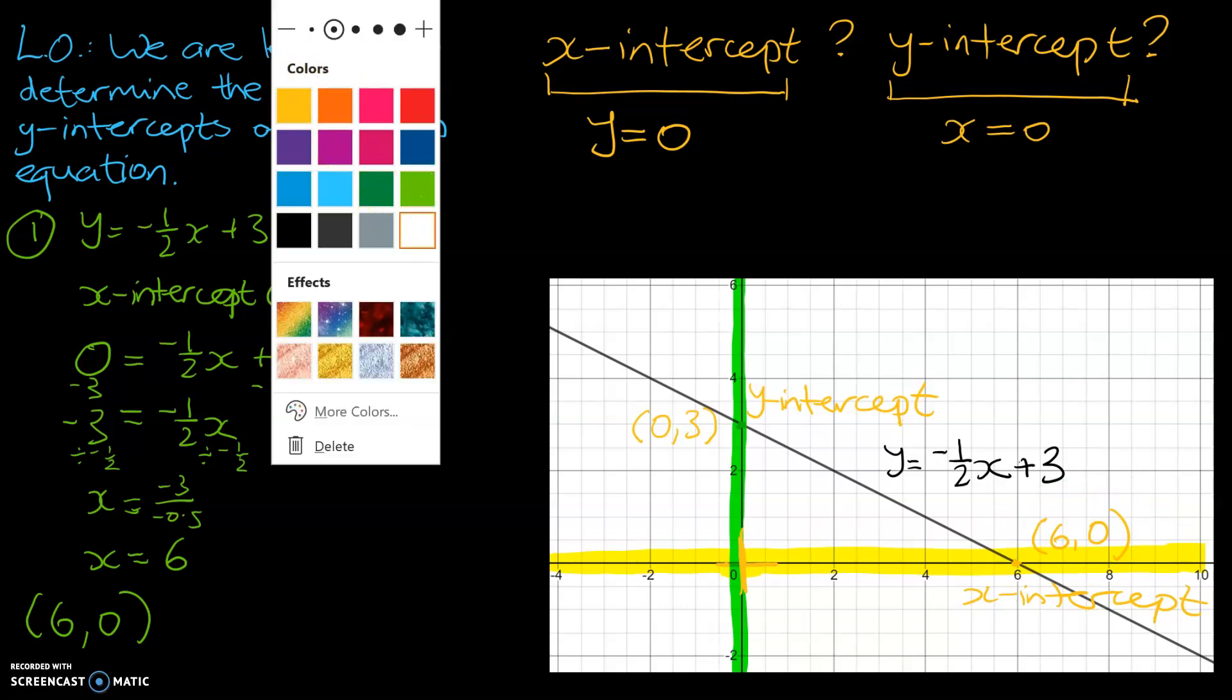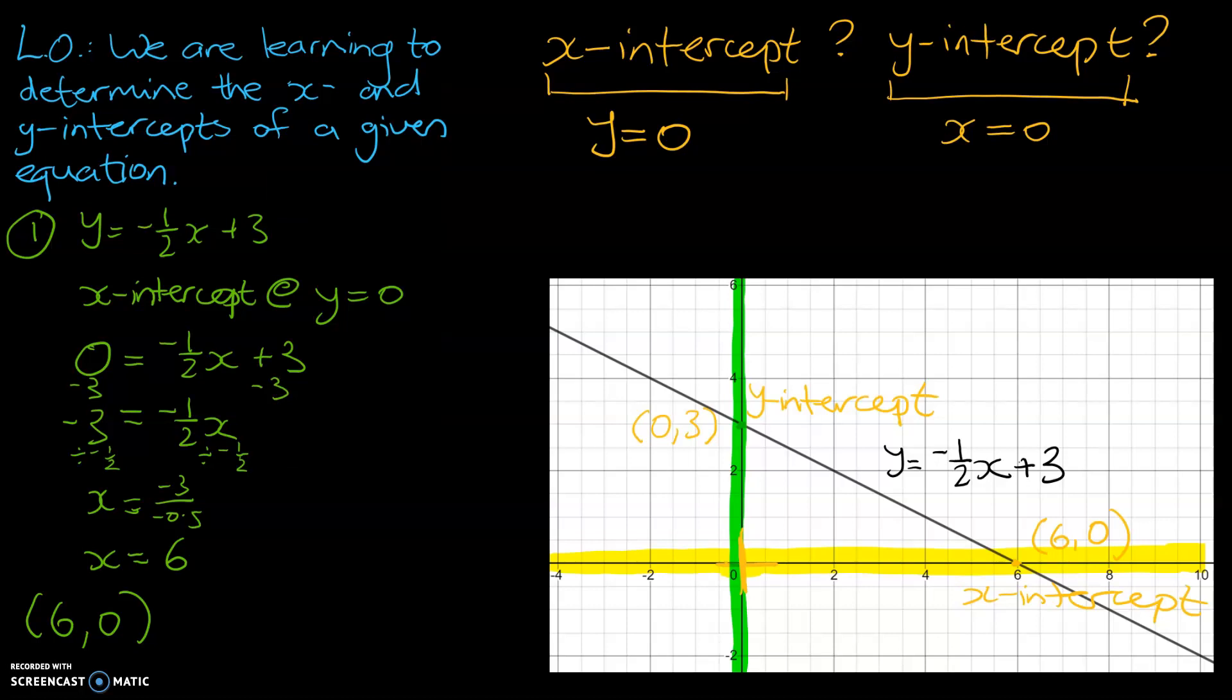So let's change pen colors, let's use white. Let's now have a look at the y-intercept. So at the y-intercept, we know the opposite value, x, that's going to be equal to 0. And what we're going to do is, we're going to substitute that x equals 0 value into our original equation.